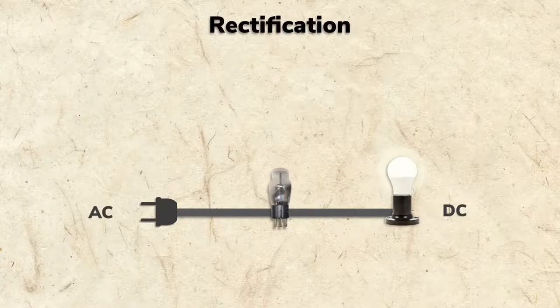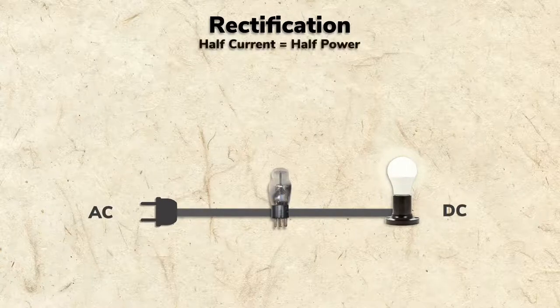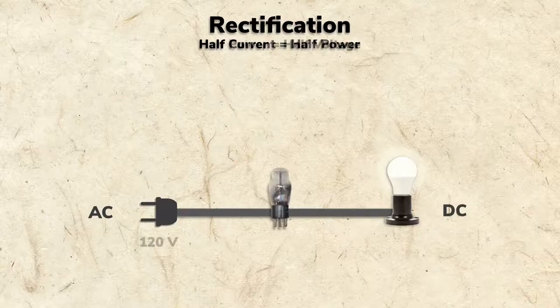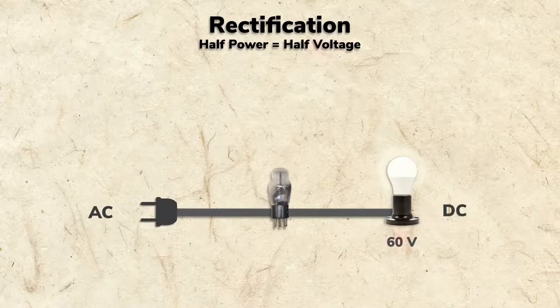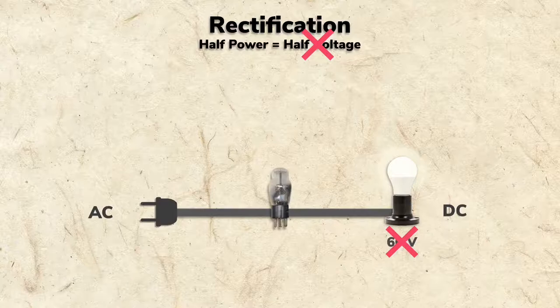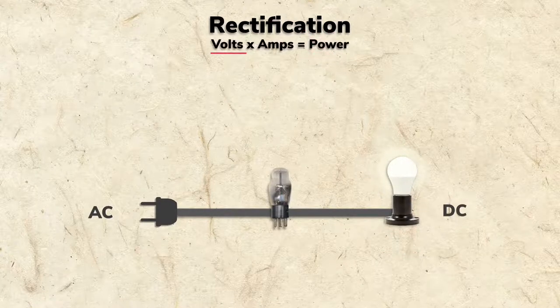Because rectification only allows half the current to pass, power is cut in half. You might think that this would turn 120 volts into 60 volts, but this isn't the case. Remember, power, which is measured in watts, is a product of not just volts, but also amps.